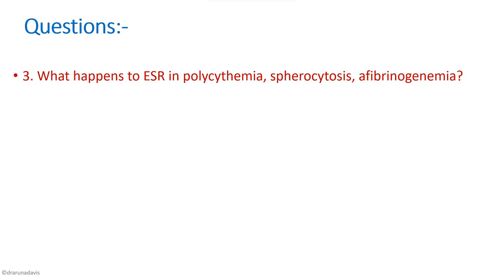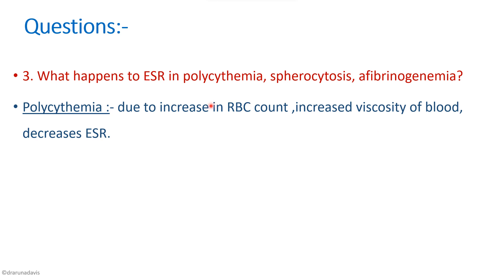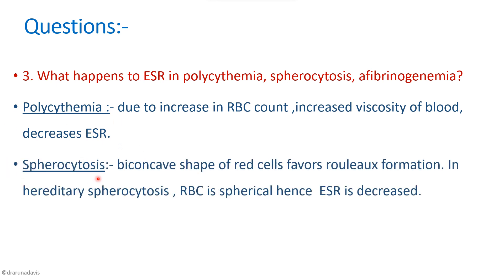In polycythemia there is an increased RBC count, leading to increased blood viscosity, so it takes longer to settle — resulting in a decreased ESR. In spherocytosis the shape of the RBC is altered; rouleaux formation requires the biconcave disc shape for stacking, so spherical RBCs cannot form rouleaux, and ESR is decreased.